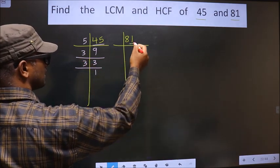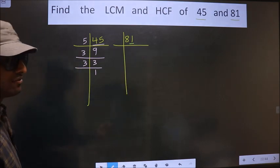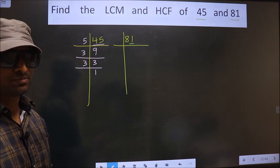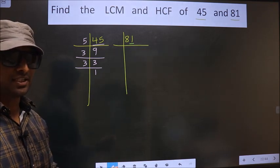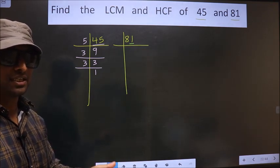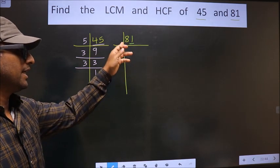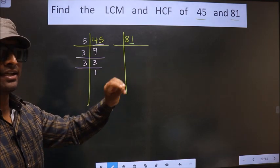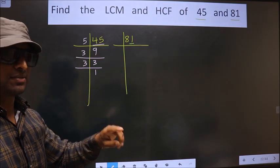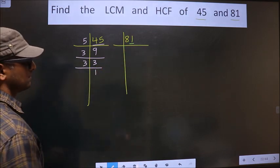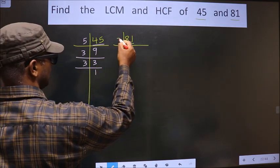Now for this number, last digit 1 which is not even so this is not divisible by 2. Next prime number 3. To check divisibility by 3, we should add the digits. That is 8 plus 1, we get 9. Is 9 divisible by 3? Yes. So this number is also divisible by 3. So we take 3 here.